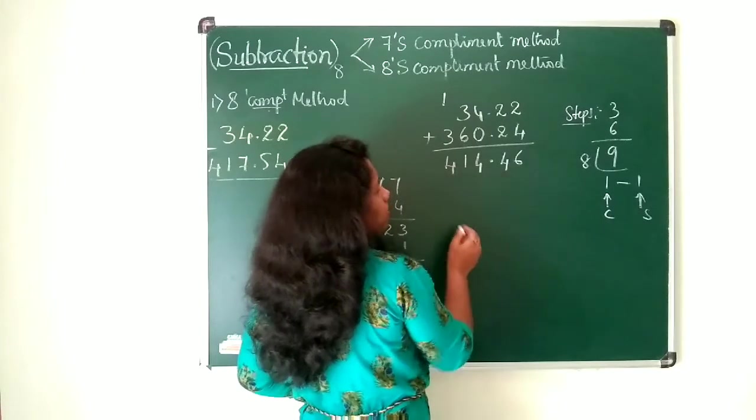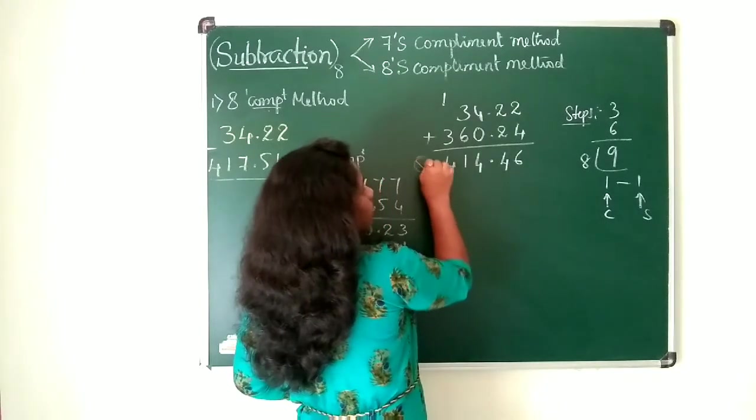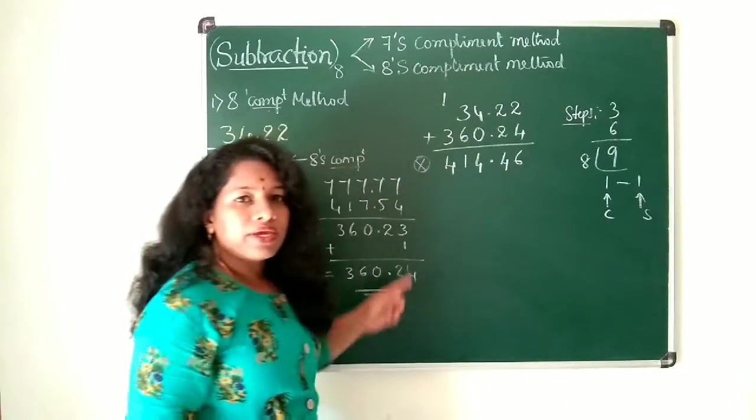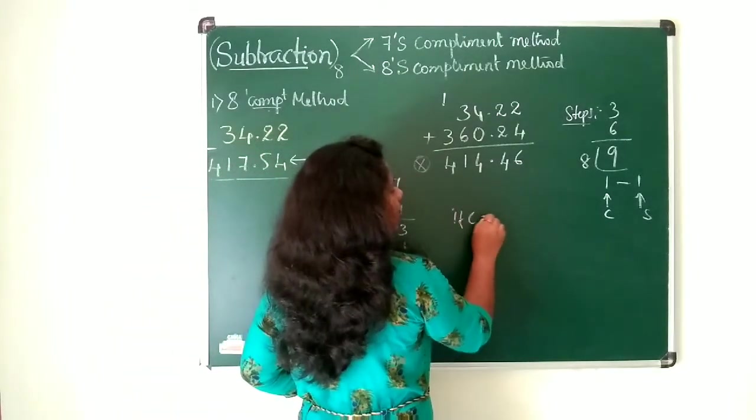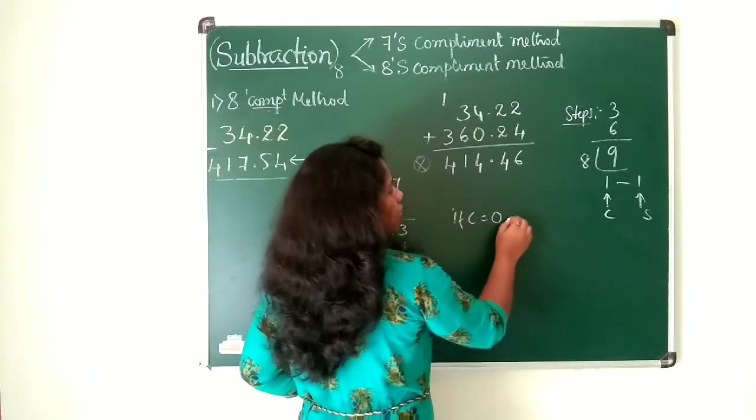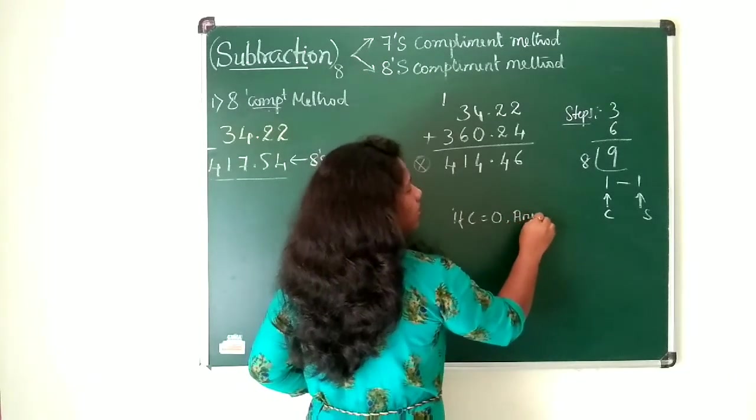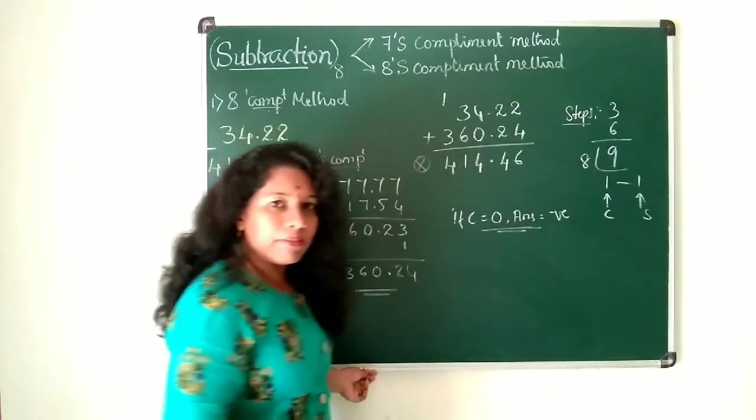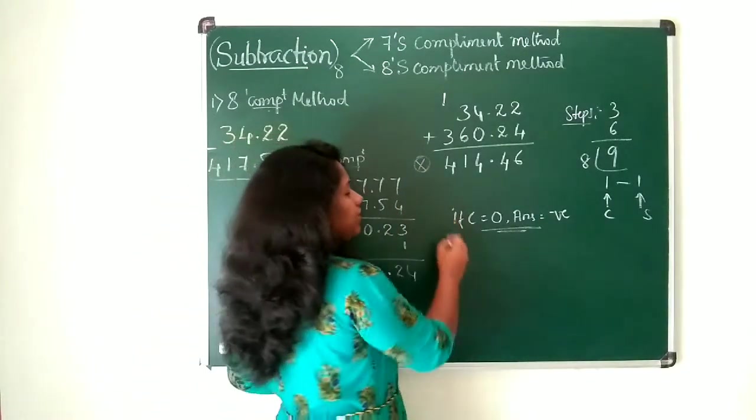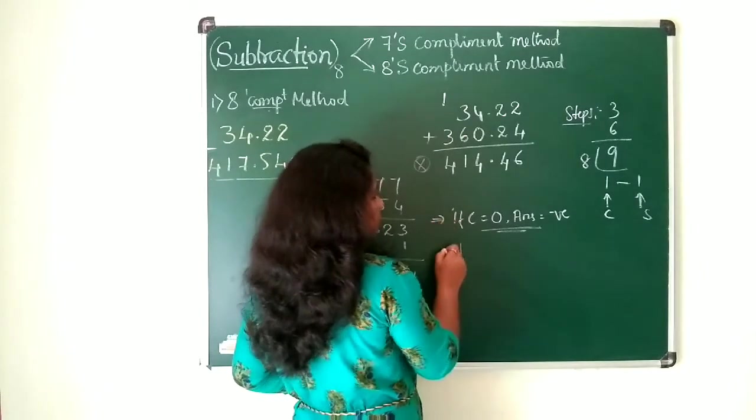414.46 and what happens to this carry here? Carry is 0. So if carry is equal to 0, this says that the answer is negative. Answer is a negative number. So what you need to do? This is the first inference.